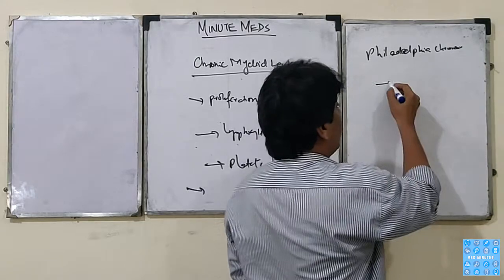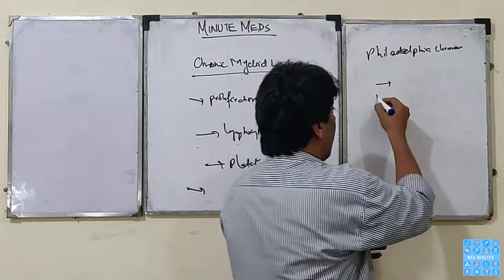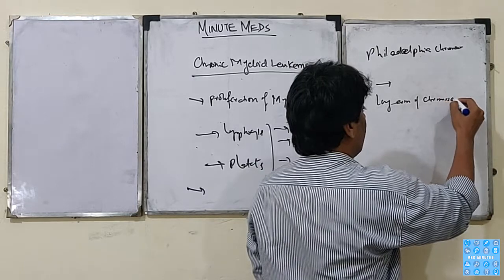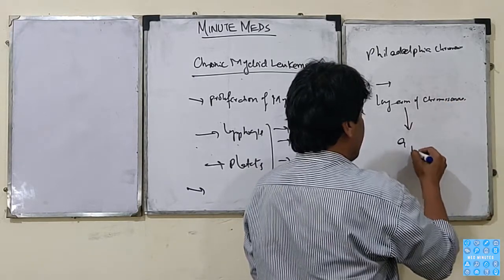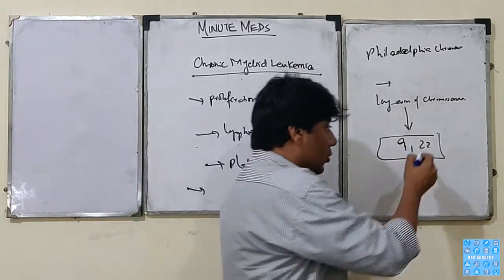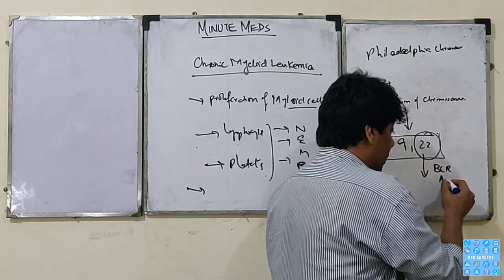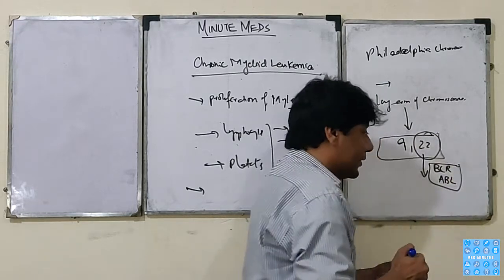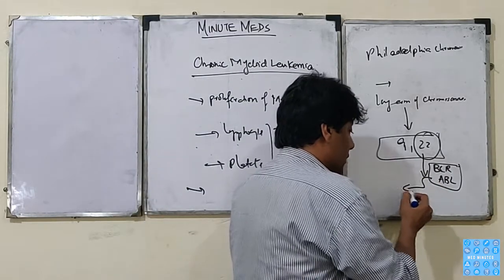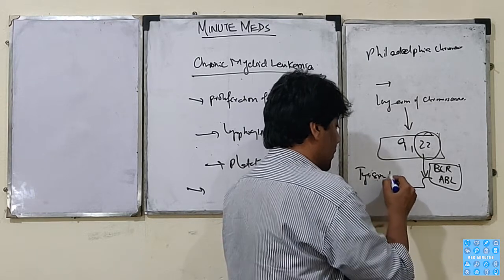There is a translocation of genes between chromosomes 9 and 22 — they share their genetic material. As a result, chromosome 22 has a combination called BCR-ABL, which is the mutant gene.